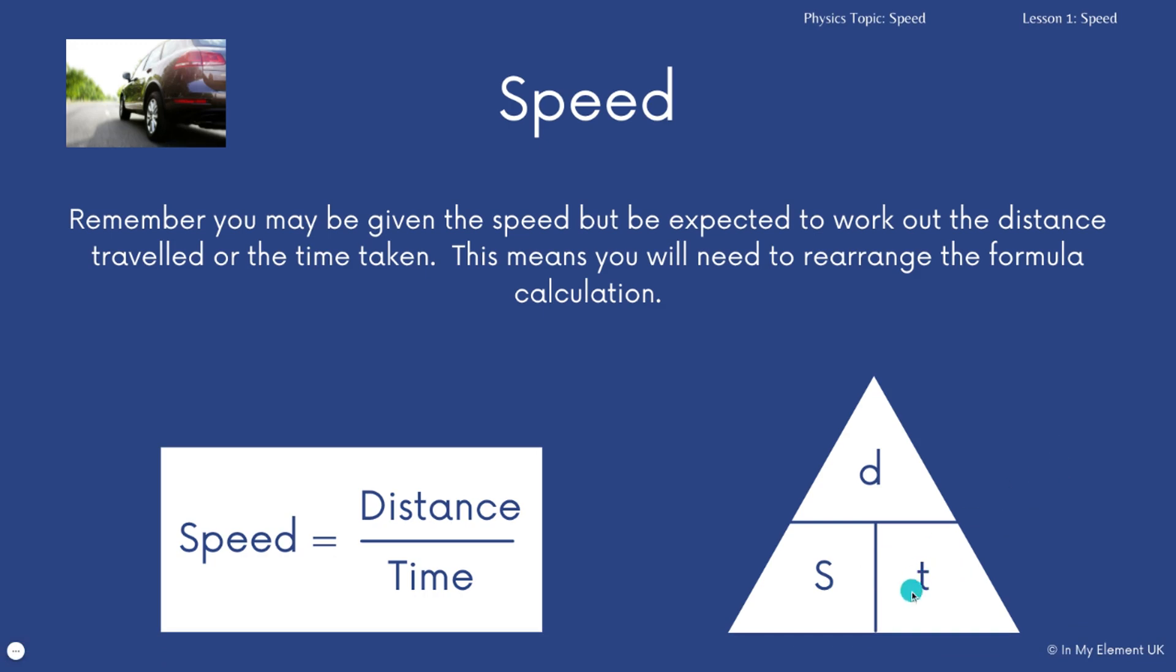And if we want to rearrange it again and we take away the time because we've been given the distance and speed and we want to know the time it's taken for the object to move, we do distance divided by speed.